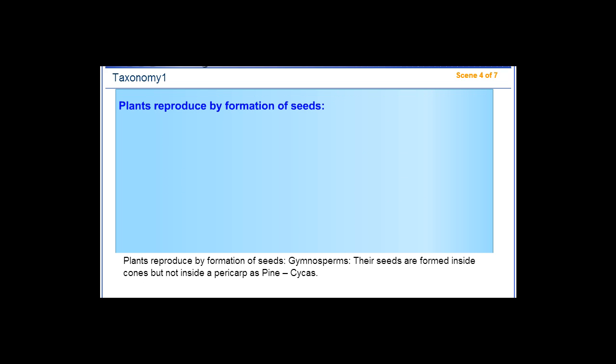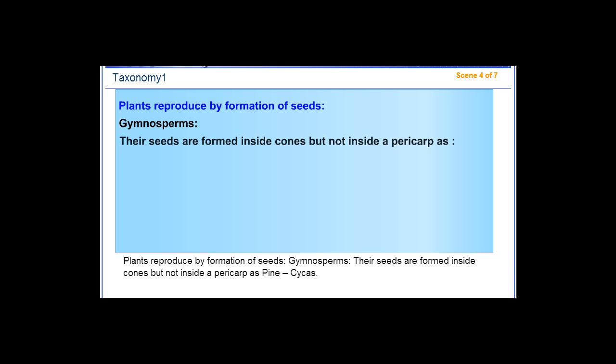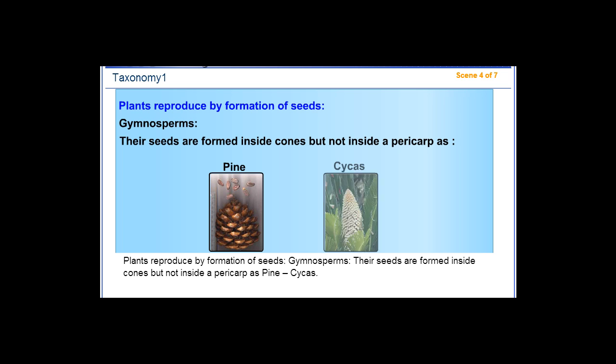Plants reproduce by formation of seeds — Gymnosperms: Their seeds are formed inside cones but not inside a pericarp, as in pine and cycas.